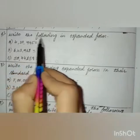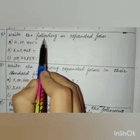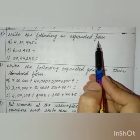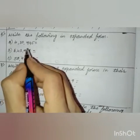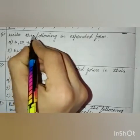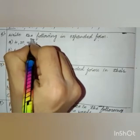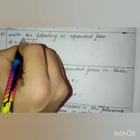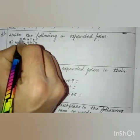Next question: write the following in expanded form. Expanded form is the addition of the place values. Let us write the place values of the digits. 5 is in the ones place, 4 is in the tens place, 9 is in the hundreds place, 0 is in the thousands place, 3 is in the ten-thousands place, 4 is in the lakhs place.